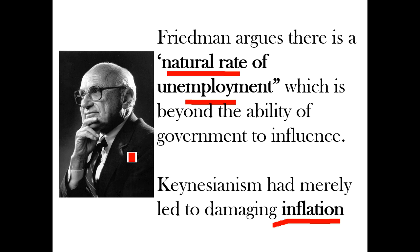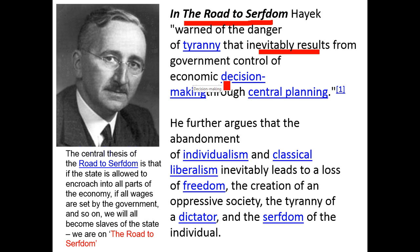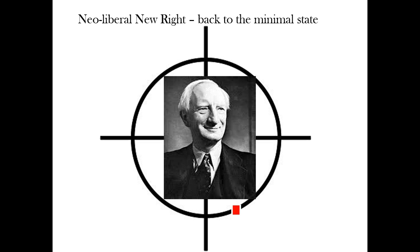The second high priest of the neoliberal New Right was the Austrian von Hayek, and his famous book was The Road to Serfdom. He warned of the danger of tyranny that he felt inevitably results from government control over economic decision-making through central planning. He argued that the abandonment of individualism and classical liberalism inevitably leads to a loss of freedom and the creation of an oppressive society. Hayek's idea of the road to serfdom also helped to form an attack on modern liberalism or social democracy — in particular, the welfare state.